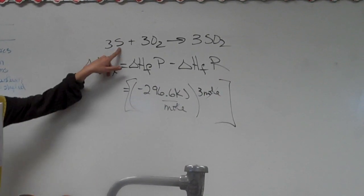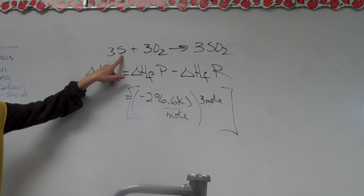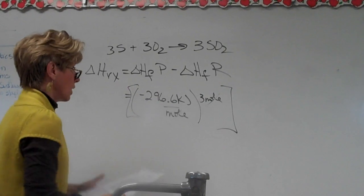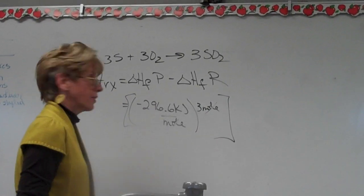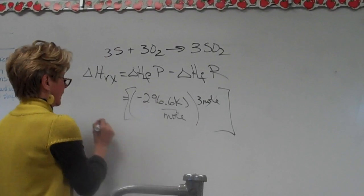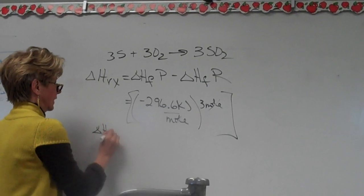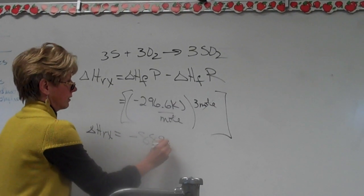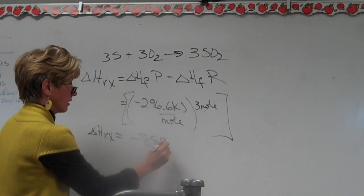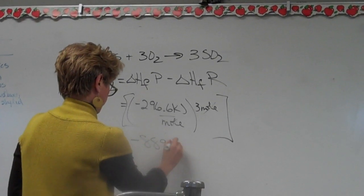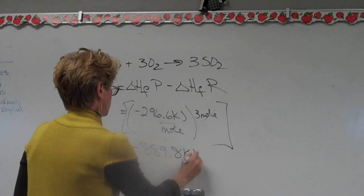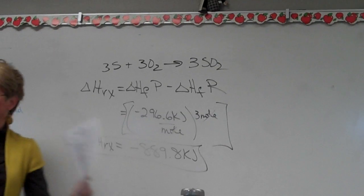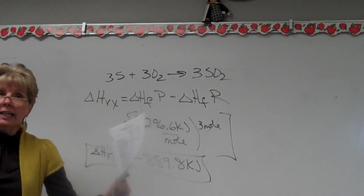Now, what's the heat of formation of sulfur? Free elements are zero, right? Zero. So all we have to do is multiply this by three, and what we get is the heat of reaction for this thing. Negative 889. Negative 889 point anything? No, that's beautiful. Negative 889 point anything. Yeah. Kilojoules. Okay. So there's heat of reaction. Okay? Pretty easy, right?